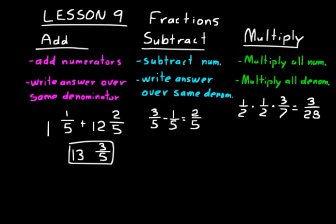Adding and subtracting fractions is kind of easy to visualize. Three-fifths minus one-fifth: think of a fraction circle with three of five portions shaded, then erase one — two-fifths remain shaded. But multiplication is less intuitive. Why does half times half equal one-fourth? What does that mean?